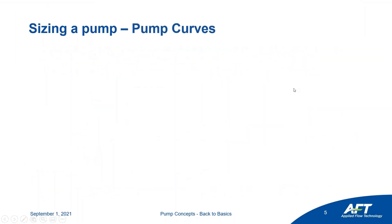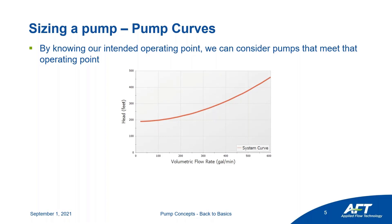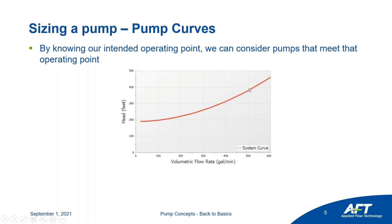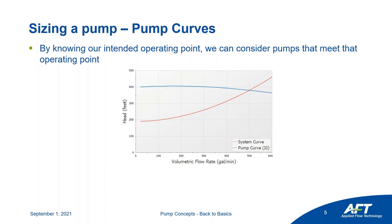Now that we understand the system and our operating point, we can consider different pump options. Looking at our system curve, our operating point was at about 500 gallons per minute and 381 feet of head. As long as our pump curve intersects that point, that will be our operating point depending on the pump. We have an intended operating point of 500 gallons per minute, and the actual realized operating point will be where the pump curve intersects the system curve. Because we're sizing, we're selecting based on our intended operating point — as long as a pump curve intersects the system curve at 500 GPM, that pump will meet our flow rate requirement.